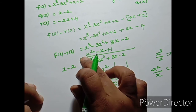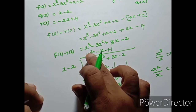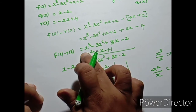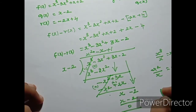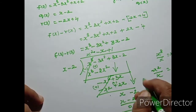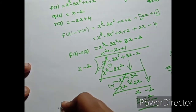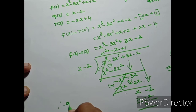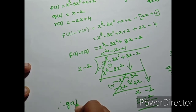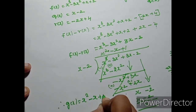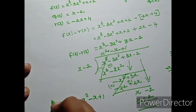Therefore, g of x is equal to x square minus x plus 1.